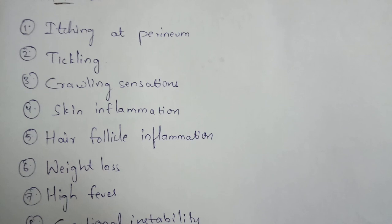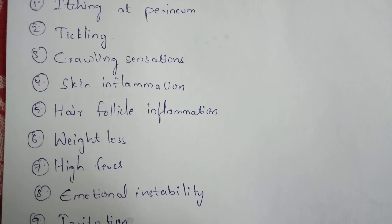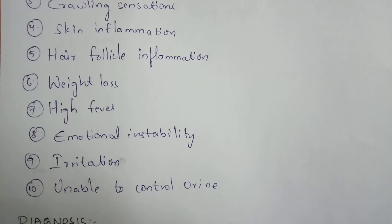Symptoms of enterobiasis include: itching at the perineum (area around the anus), tickling or growling sensation, skin inflammation, hair follicle inflammation, weight loss, high fever, emotional instability, irritation, and inability to control urine.